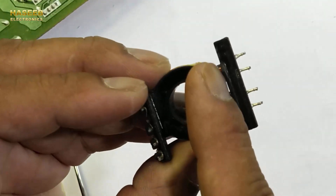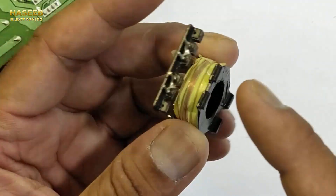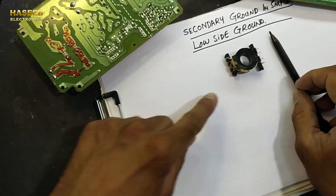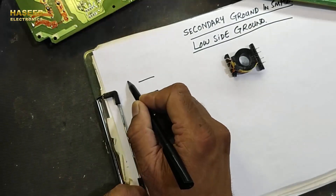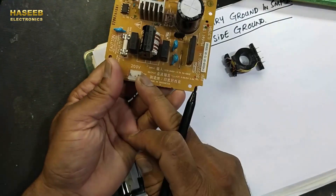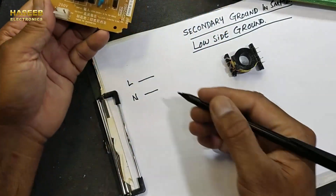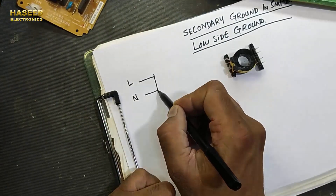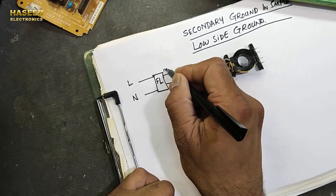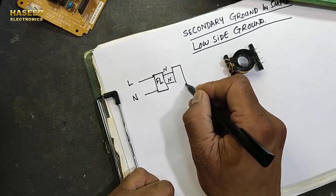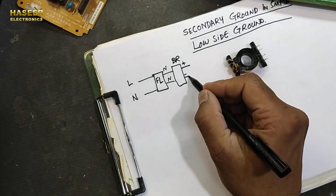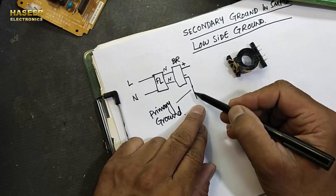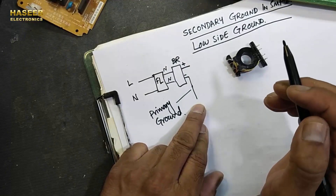The magnetic flux is generated in the primary winding, cuts through the secondary winding, and we take the output voltage. Let me show an example. This transformer's output side has many strands in parallel. We normally apply line and neutral through a filter, then through a bridge rectifier, which provides positive and negative voltage. This negative voltage is called the primary ground — it is a DC ground.